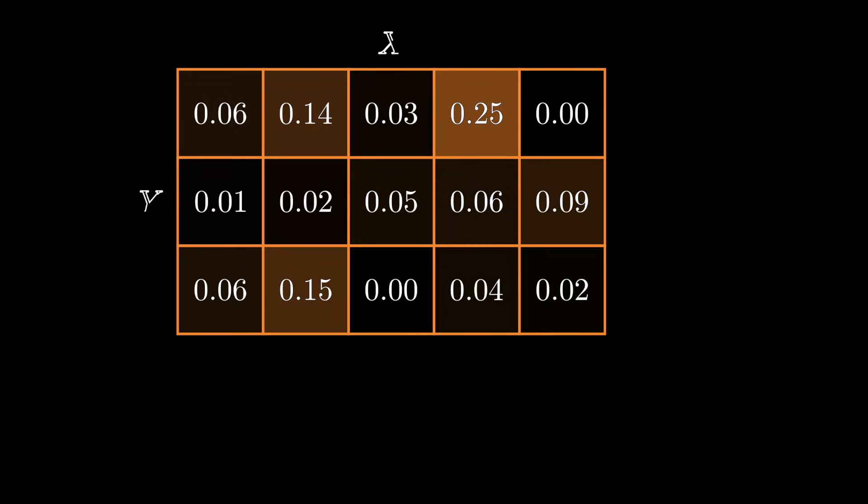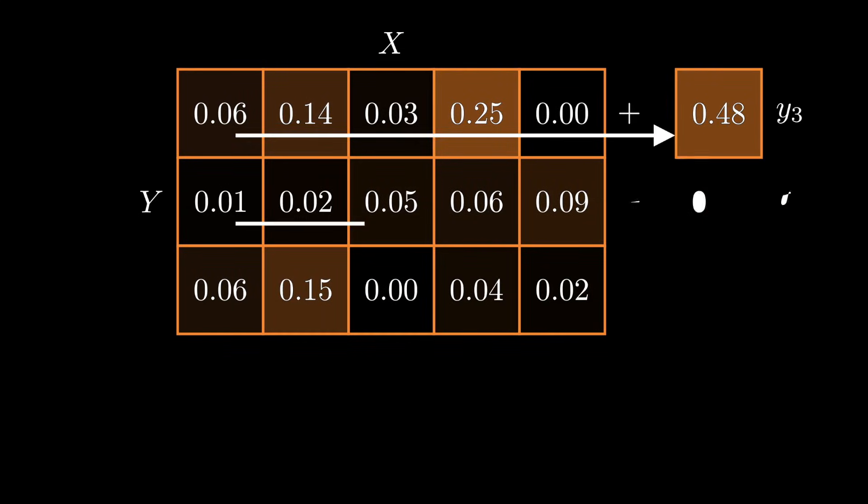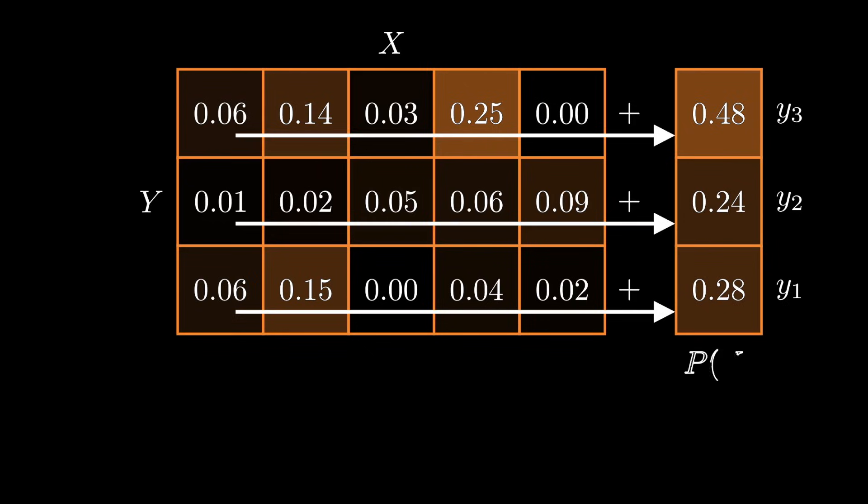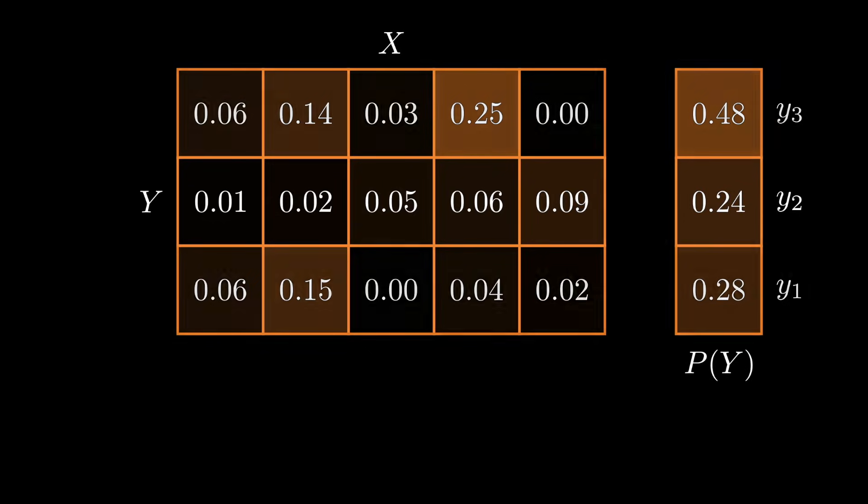Let's imagine going back to our discrete PMF from earlier. We compute the marginal distribution over the three outcomes y1, y2, and y3. Now, if I wanted to talk about the distribution over x, given that y equals y2,